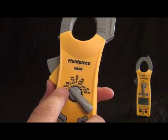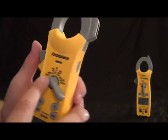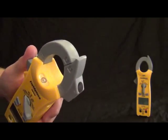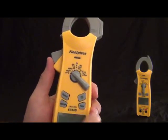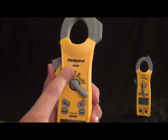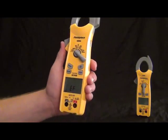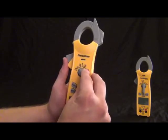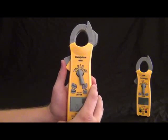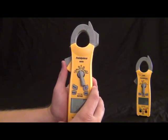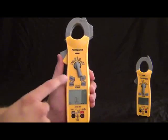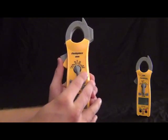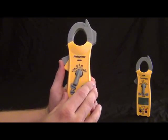Hertz, amps, and volts. That's hertz and amps with the clamp, and it still has a jaw light. Volts with the leads, volts DC, hertz and duty cycle. That one's with the leads, and then microamps DC. Still a K-type temperature probe, selector switch. And that is the SC400 series. The other one that's available is the SC420, again, same package, a little bit less features than that one.